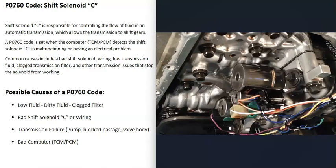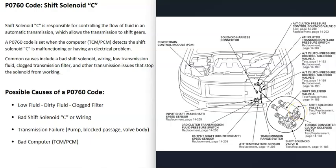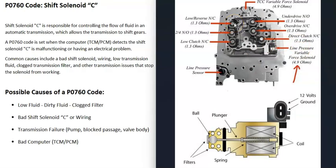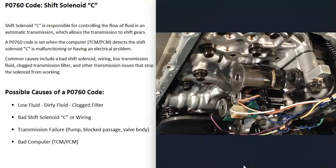The next thing that could cause this is a bad shift solenoid C or the wiring going to the solenoid. You can go and test it — you will need to get wiring schematics and diagrams because there will be differences between vehicles. You locate that shift solenoid C on your particular vehicle. One method is to use a multimeter set to ohms, look up the rated ohms for that solenoid, and if it goes outside of that range, you know it's bad. You can also use a multimeter to test the wiring going to the shift solenoid, checking for voltage and looking for any open or short circuits.